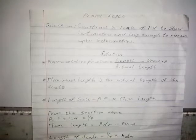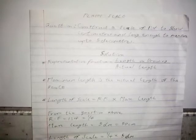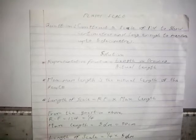Here I want to show you how you can construct a plane scale. A plane scale is one of the examples of graphical scale. When we talk about graphical scale, there are five types: plane scale, diagonal scale, vernier scale, comparative scale, and scale of chords.